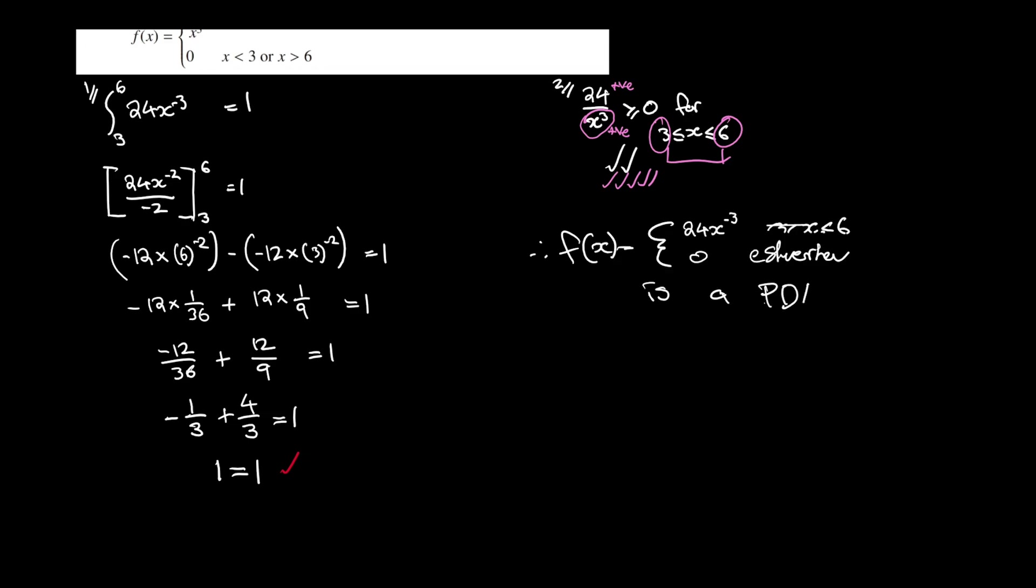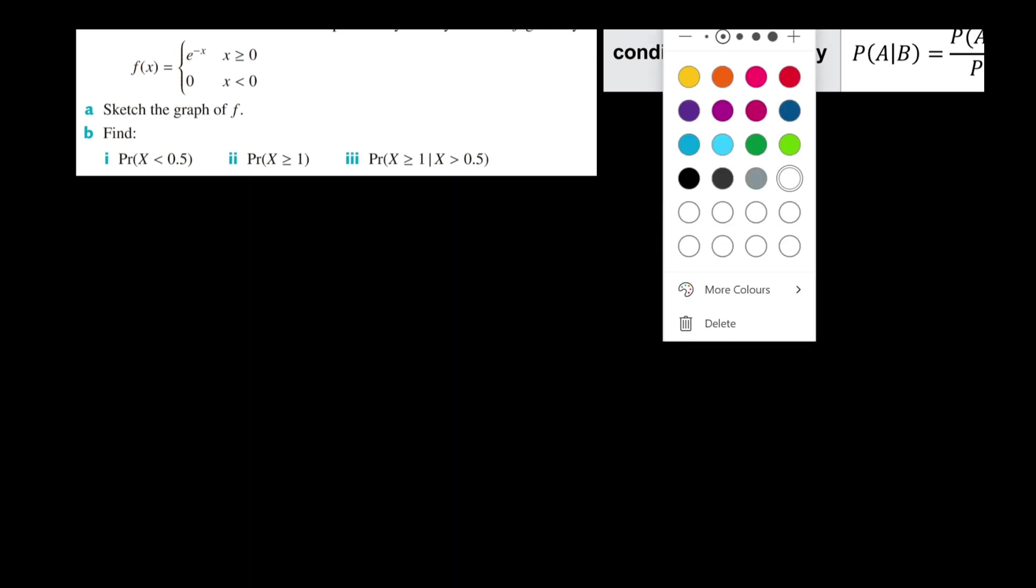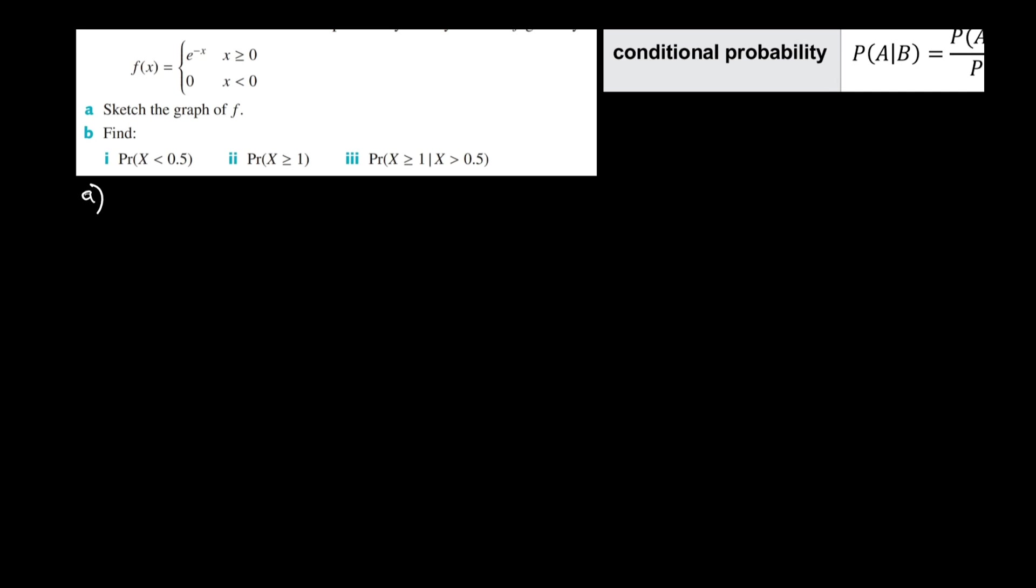We have got a PDF. Very good. Second example. We've got a continuous random variable x, and it's given a probability density function defined below. First part wants us to sketch this function. This cognitive verb sketch implies we've actually got to do some working and show a sketch.